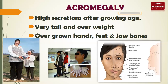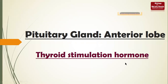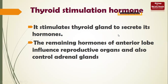Those are the three diseases related to somatotrophin. The next hormone from the anterior lobe is the thyroid-stimulating hormone, which stimulates the thyroid gland to secrete its hormones. The pituitary is the master gland and controls the secretions of all other glands. The remaining hormones of the anterior lobe influence reproductive organs and adrenal glands as well.